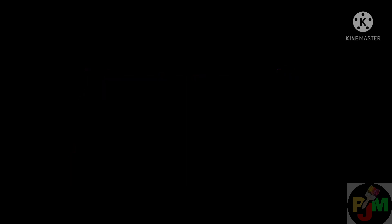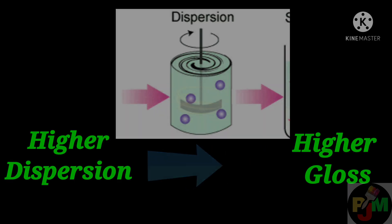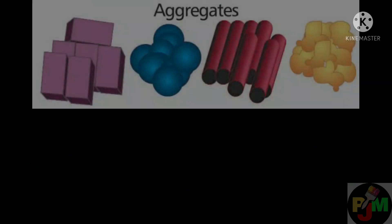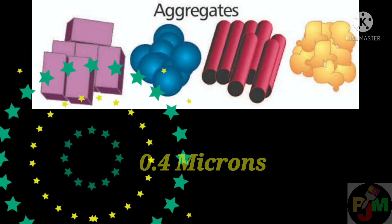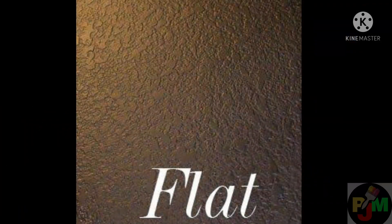Degree of dispersion: higher the degree of dispersion, higher the gloss. Aggregates of 0.4 microns reduce the gloss appreciably.